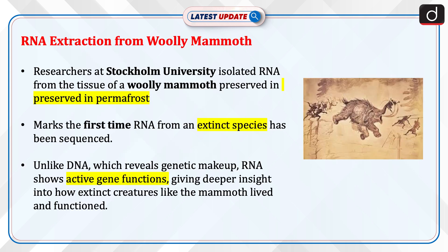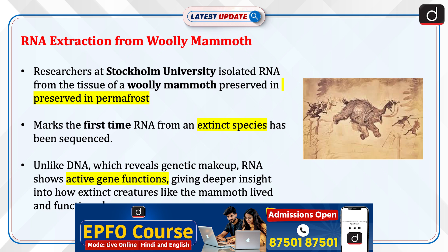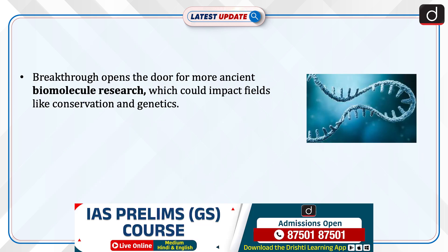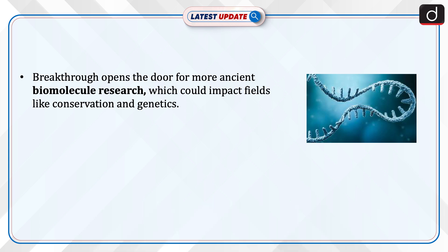Now let's discuss RNA extraction from the woolly mammoth. Researchers at Stockholm University isolated RNA from the tissue of a woolly mammoth preserved in permafrost for 40,000 years. This marks the first time RNA from an extinct species has been sequenced. Unlike DNA, which reveals genetic makeup, RNA shows active gene functions, giving deeper insight into how extinct creatures like the mammoth lived and functioned. The breakthrough opens the door for more ancient biomolecule research, which could impact fields like conservation and genetics.